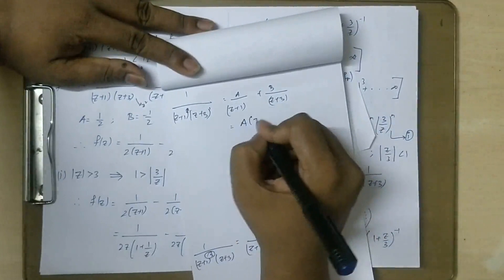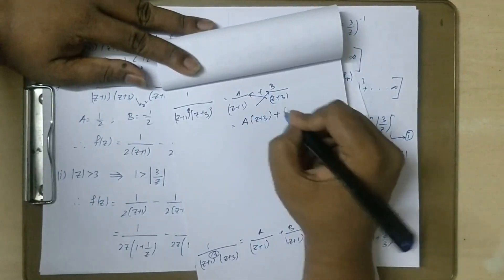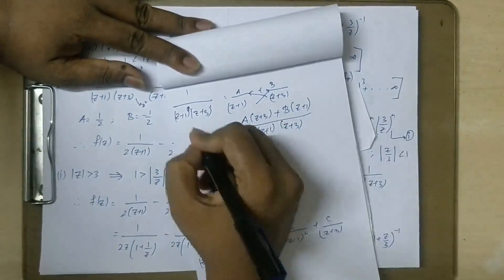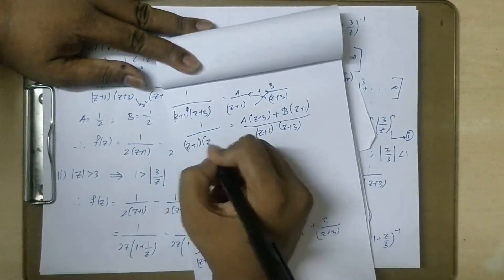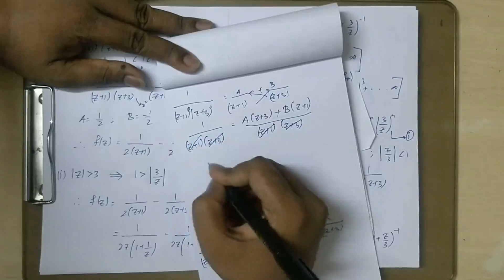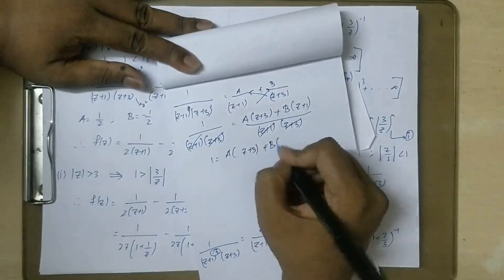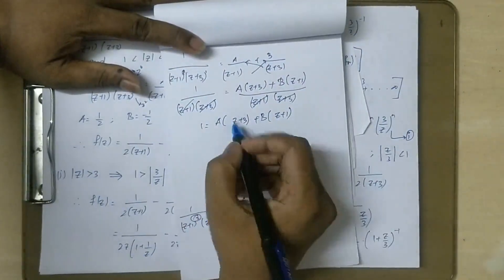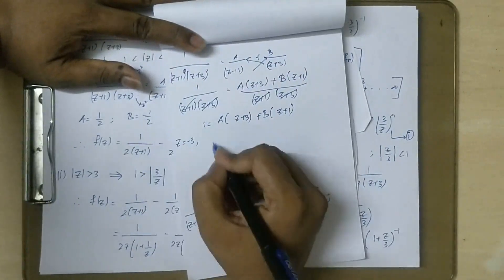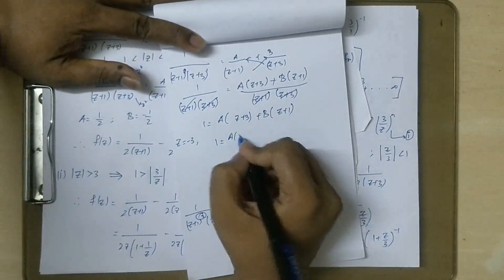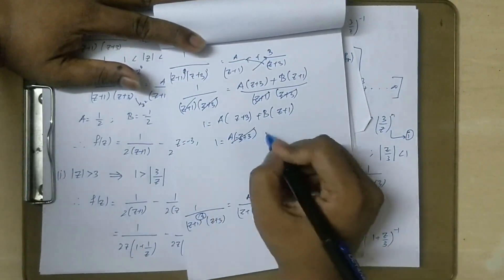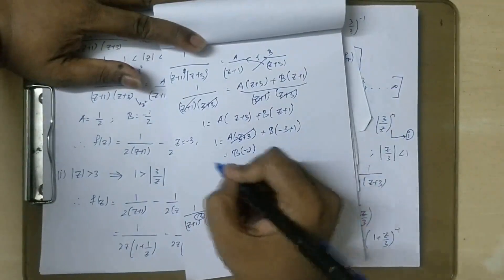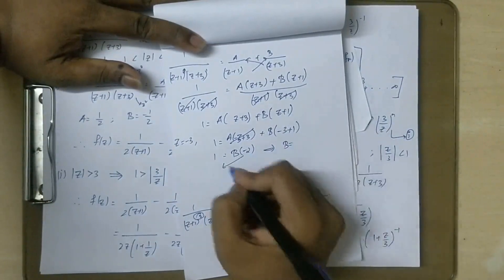So if you want to cross multiply: A into (z+3) plus B into (z+1). Now set z equal to minus three. So B into (minus three plus one) equals minus two. So which implies B is equal to minus one by two.